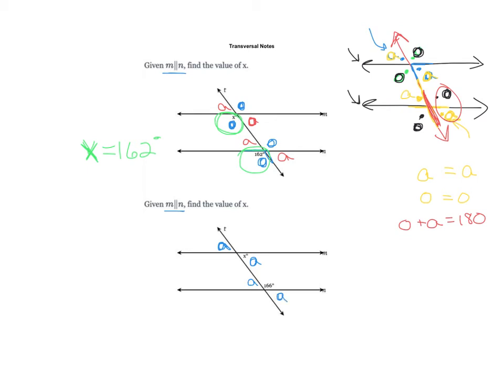This time when I circle the two angles I'm working with, one is an o and one is an a, which means they add up to 180. So to find x, which is next to that acute angle, I'm going to do 180 minus 166, which equals 14 degrees.